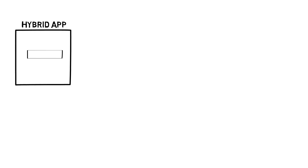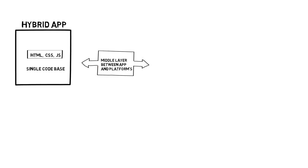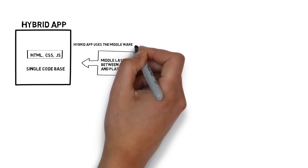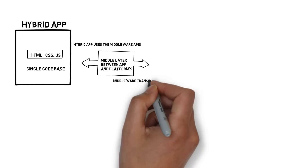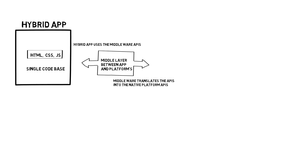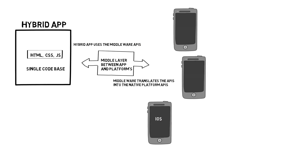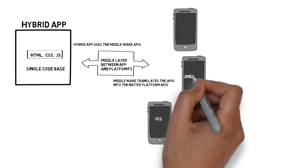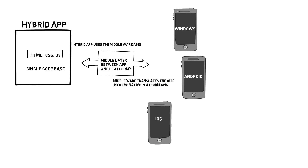How does a hybrid app work? Hybrid apps are written in HTML, CSS, and JavaScript with a single code base. A middleware layer sits between the app and the platforms. The hybrid code uses the middleware APIs instead of the native application APIs, and the middleware then translates those APIs into the native platform APIs. This means you can write one set of source code and it should translate and run on iOS, Android, and Windows. But don't be fooled — hybrid apps are usually very buggy, slow, and provide poor user experiences.